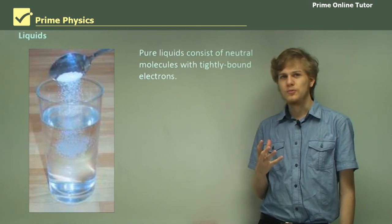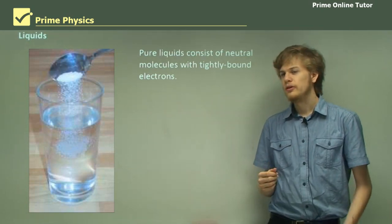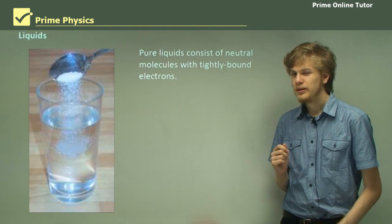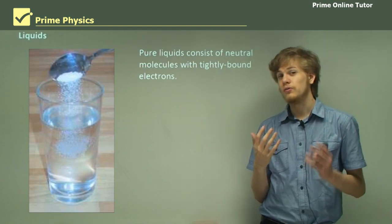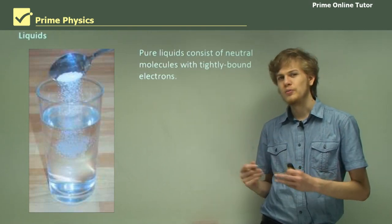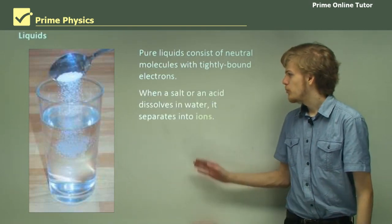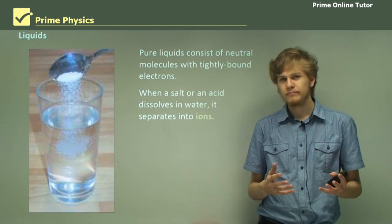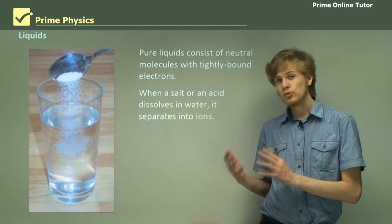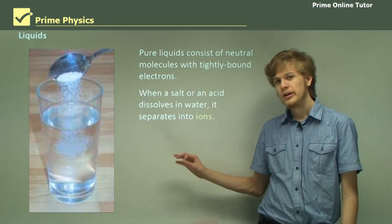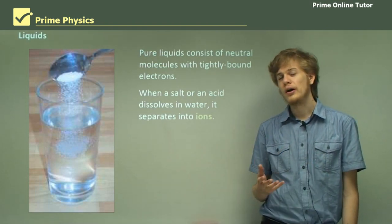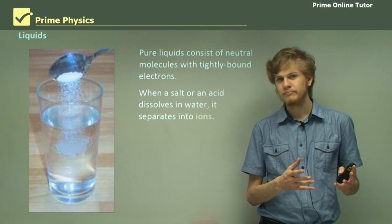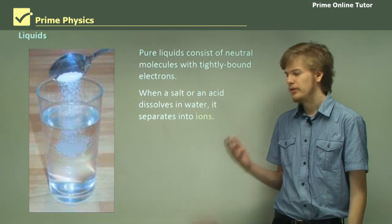Now let's look at some conductive liquids. Pure liquids consist of neutral molecules with tightly bound electrons, and initially this makes it seem like they're not very good conductors of electricity — except of course for mercury, which is a metal. But when a salt or an acid dissolves in water, the salt or the acid will separate into ions. If we dissolve sodium chloride — table salt — in water, it'll separate into sodium ions and chloride ions. If we choose an acid instead, one of the ions will be a set of hydrogen ions and the other will be specific to the acid that we're using.